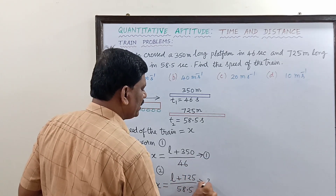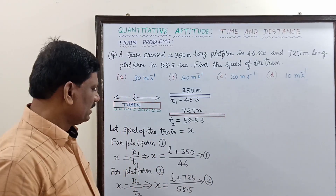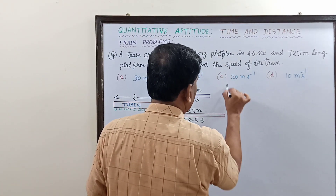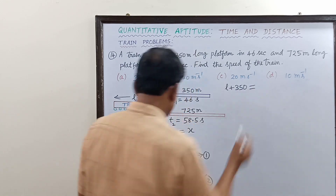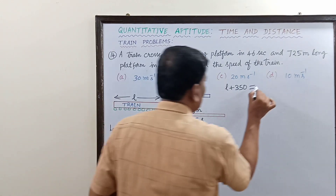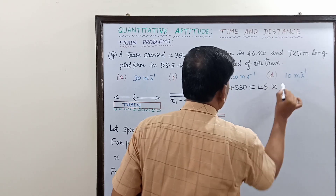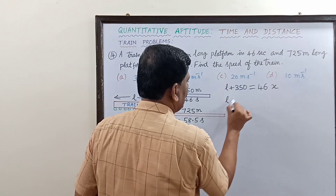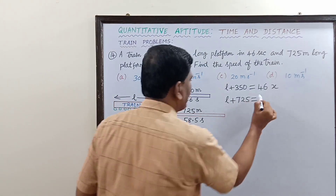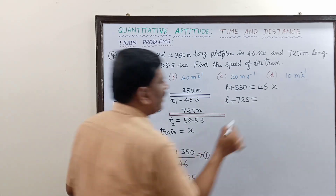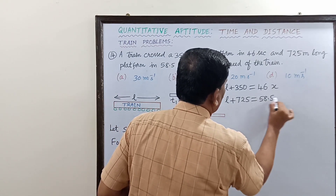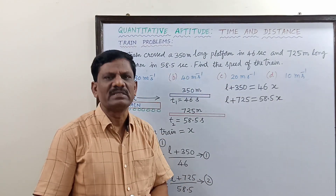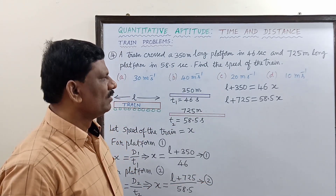Rewriting both equations in linear form: equation 1 becomes L plus 350 equals 46 times X, and equation 2 becomes L plus 725 equals 58.5 times X. This converts them into standard linear equations that are easier to solve. Now we subtract the first equation from the second.